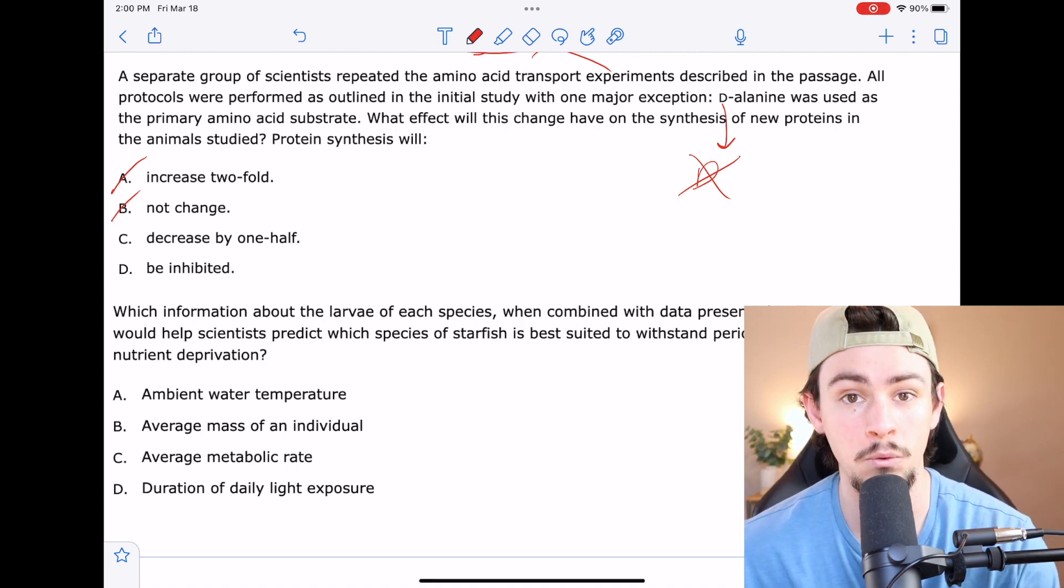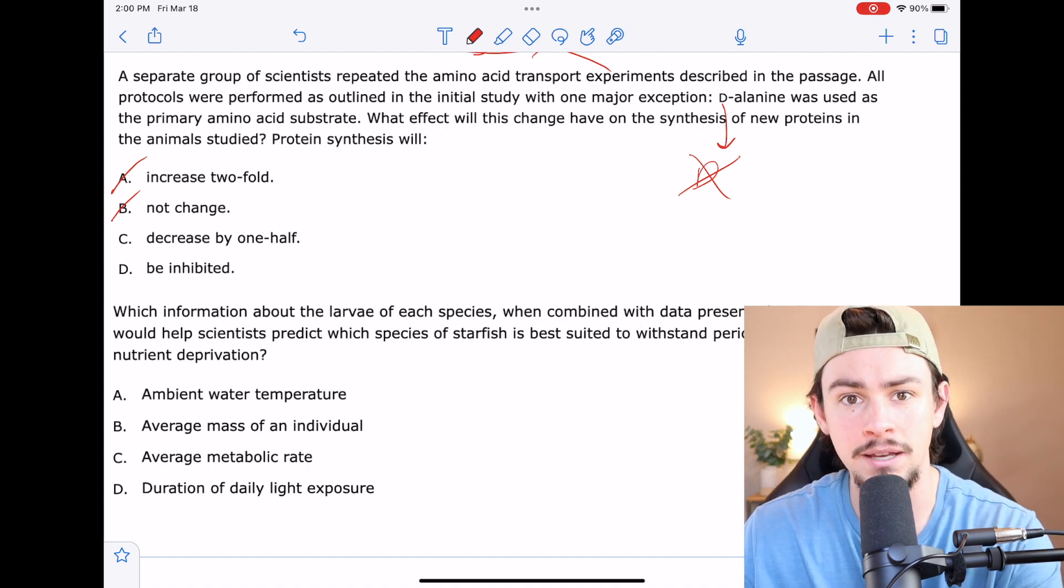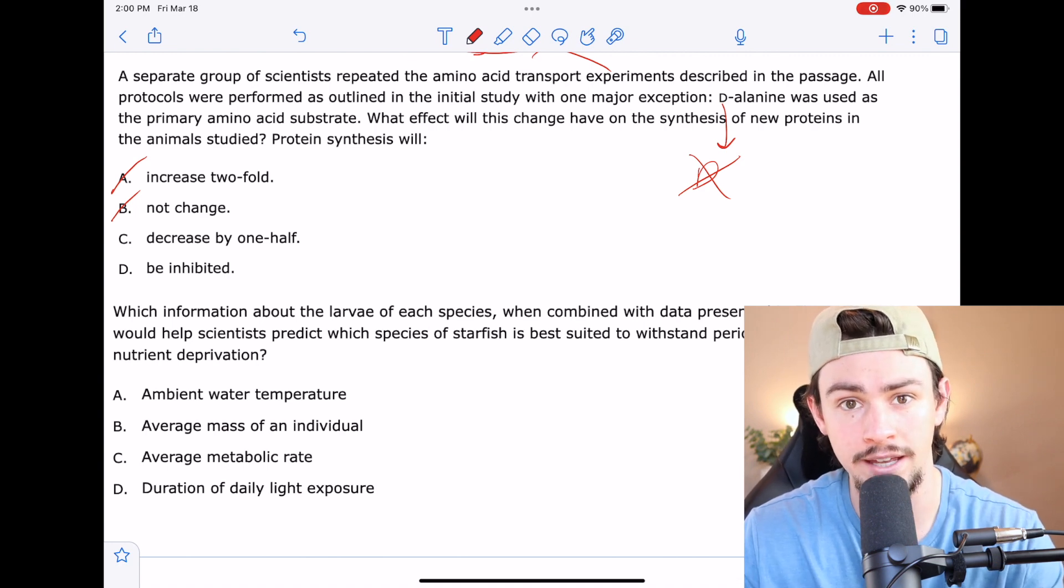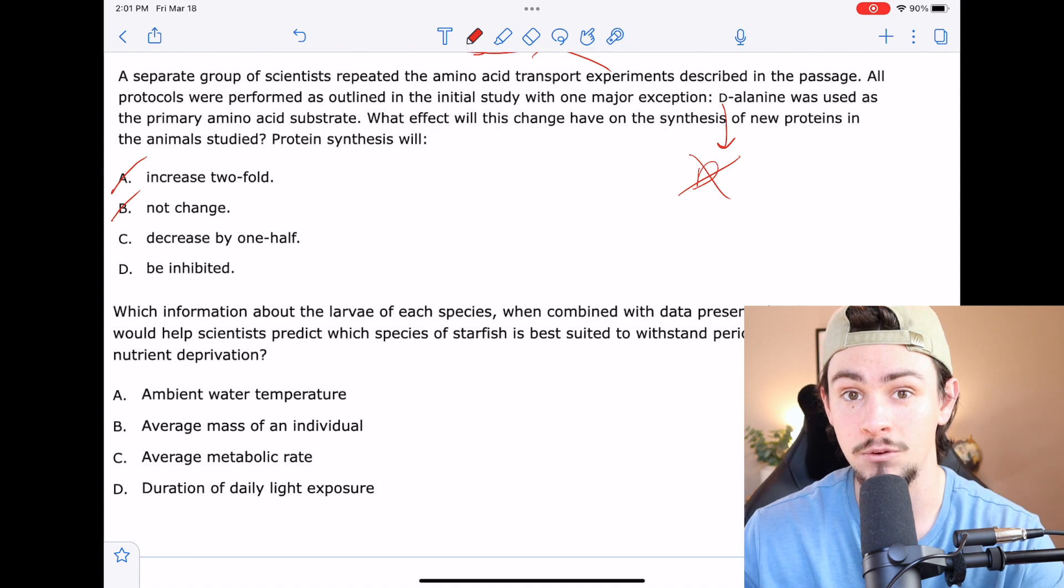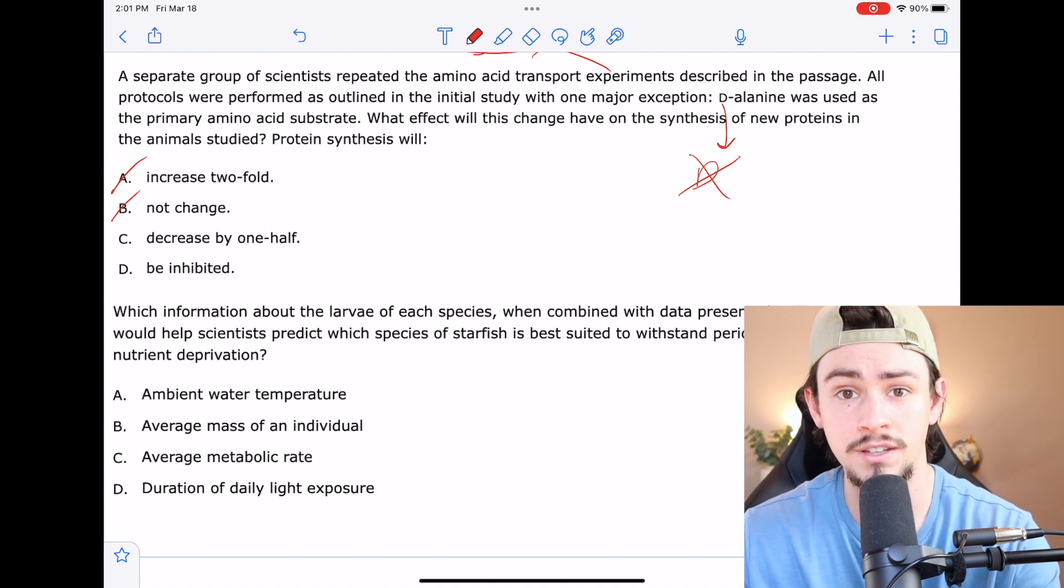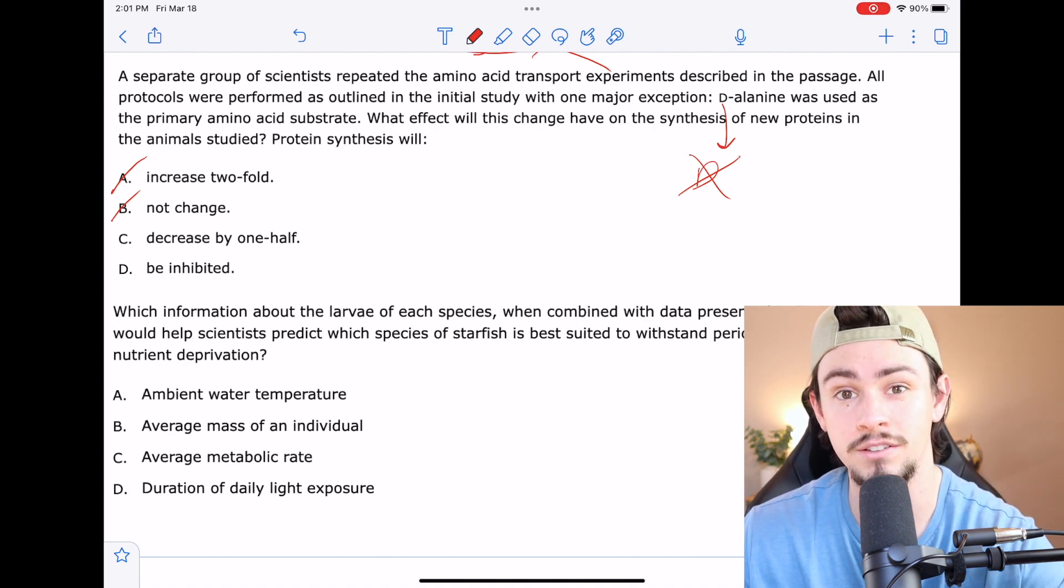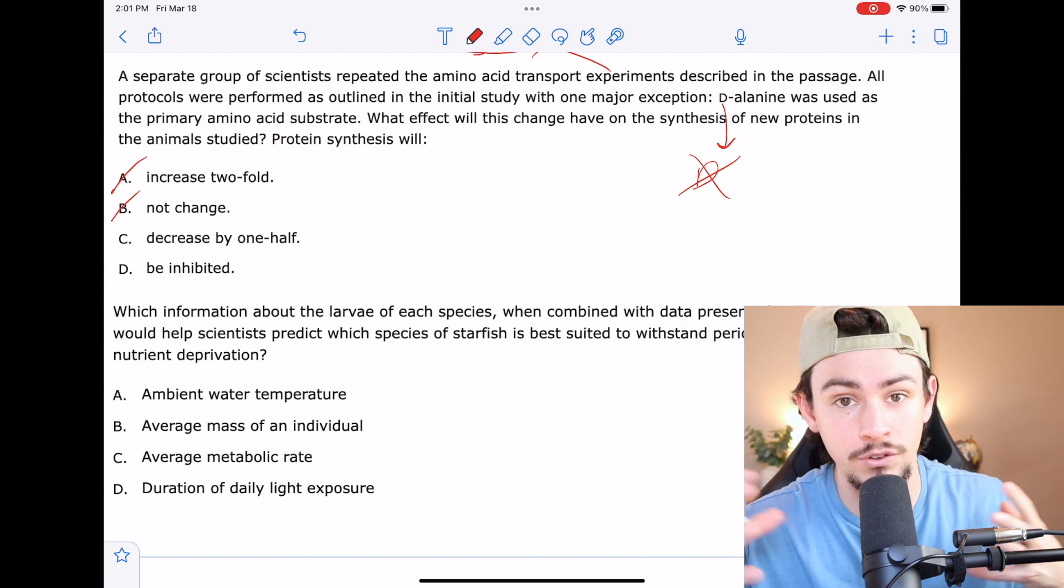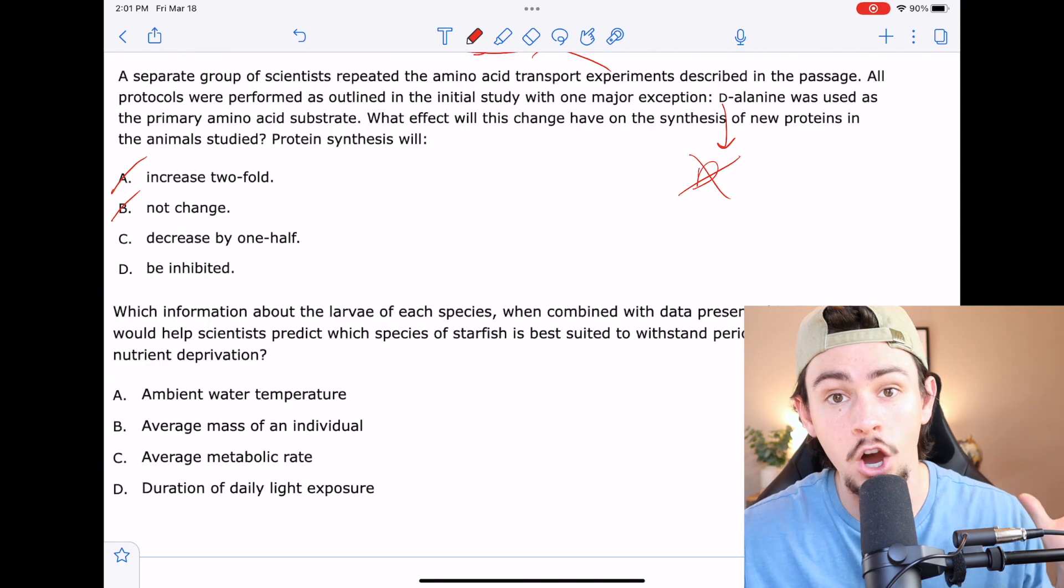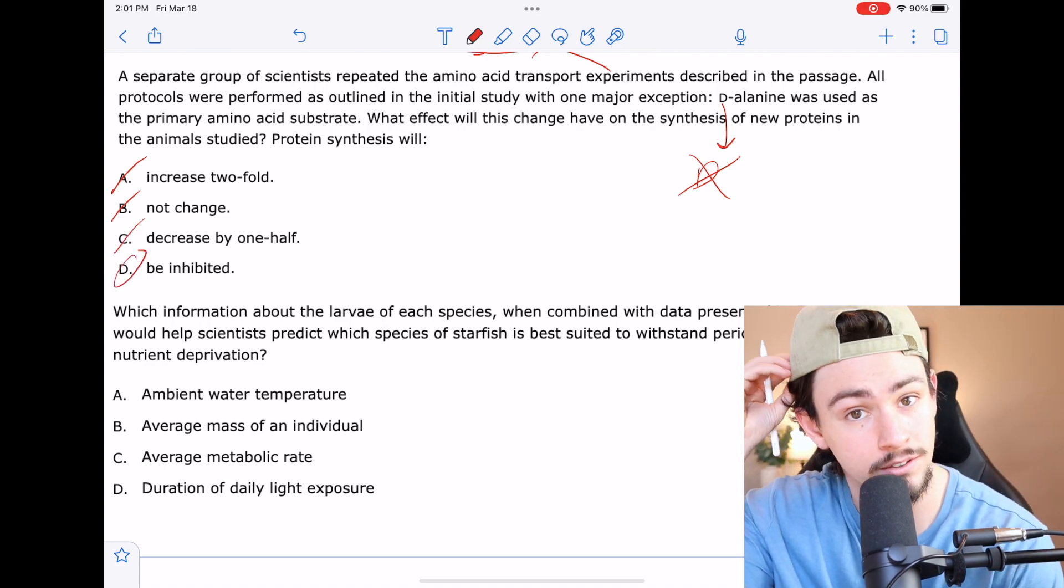C says decrease by one half. We don't have anything in the passage that alludes to the fact that alanine makes up 50% of the protein. That's the only way I could see C as being a reasonable answer. But even if we did have that, I'd want to caution you to not pick C. Because if you have 50% of a protein is made of one amino acid and then you no longer have that amino acid available, you're not going to be able to string that protein together. So you're not going to have half the available protein. You're going to have none of the functional protein. So I'd rule out C and that leaves D as being the correct answer.